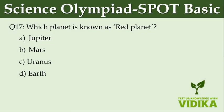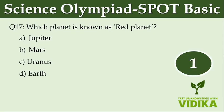Which planet is known as the red planet? Option A: Jupiter. Option B: Mars. Option C: Uranus. Option D: Earth.